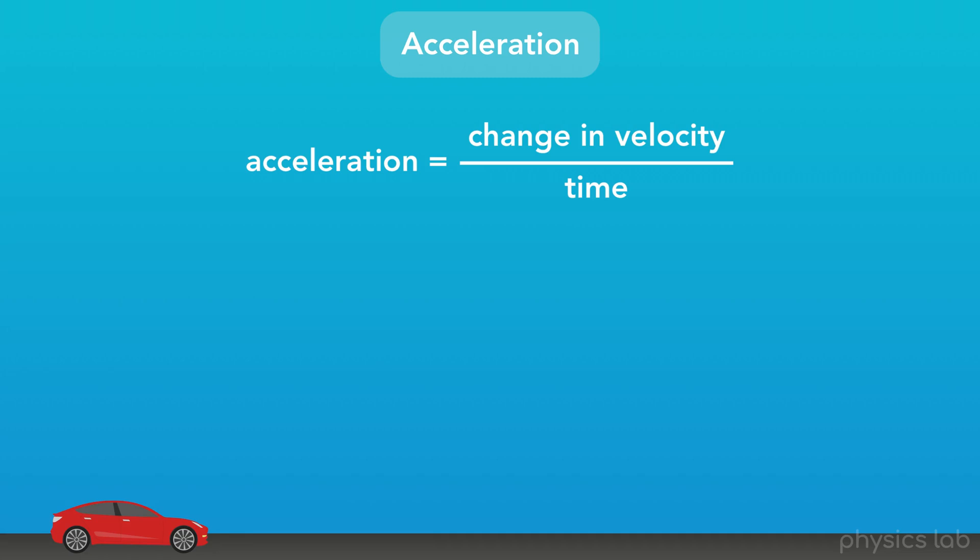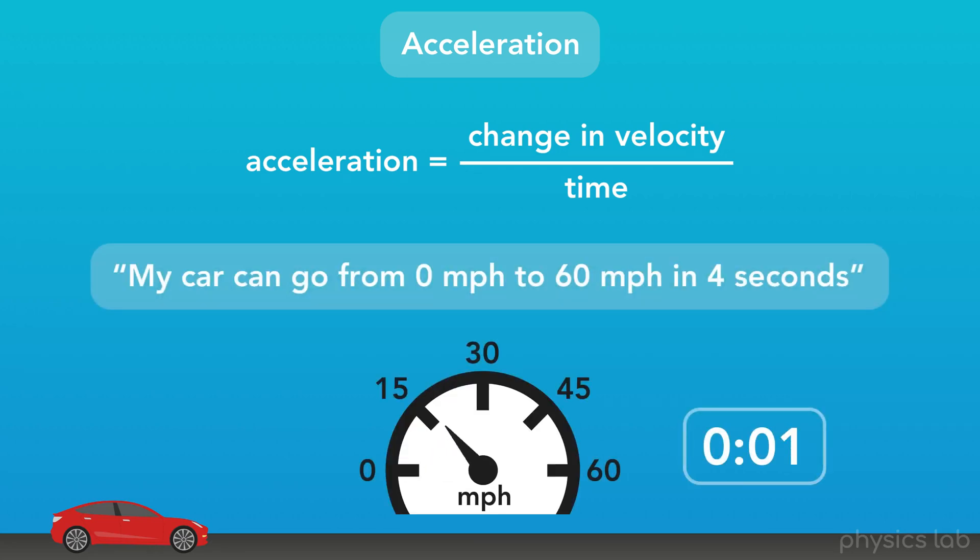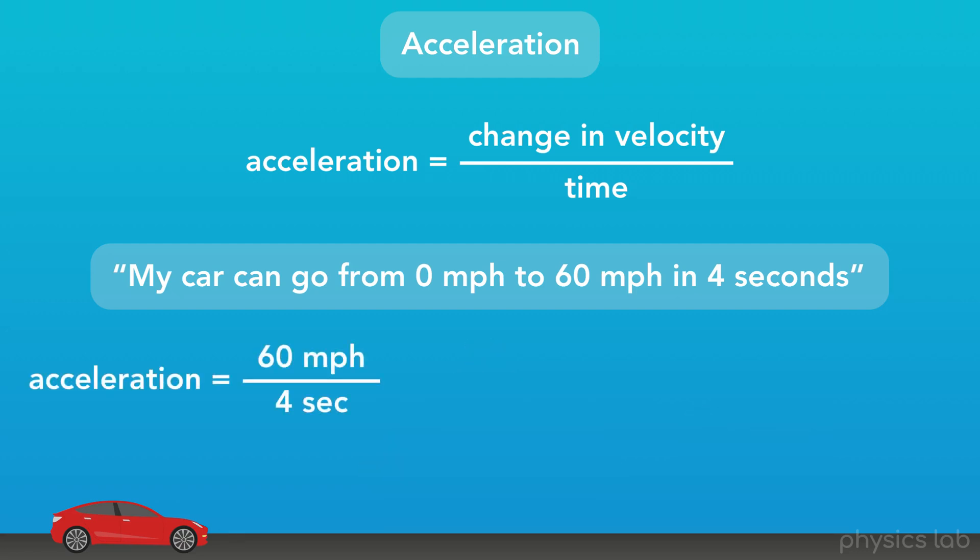If you've ever heard someone say something like, my car can go 0-60 in 4 seconds, well they're talking about acceleration. What they're really saying is my car can go from 0 mph to 60 mph in 4 seconds. That means the acceleration of the car is its change in velocity, which is 60 mph, over the period of time, which is 4 seconds.